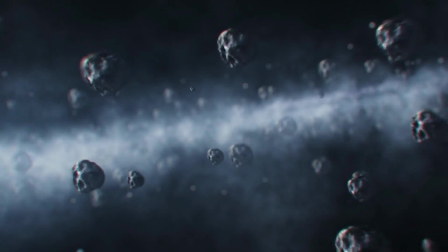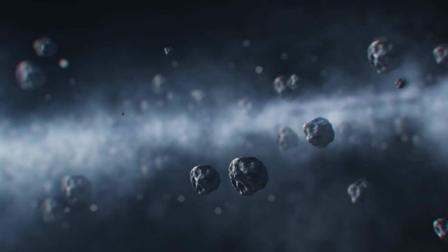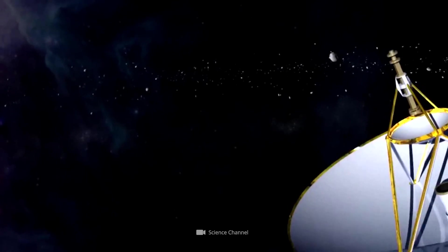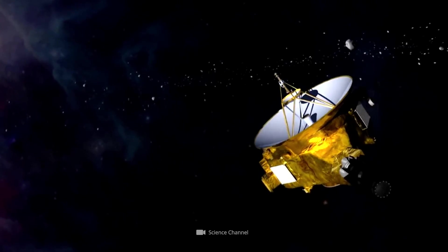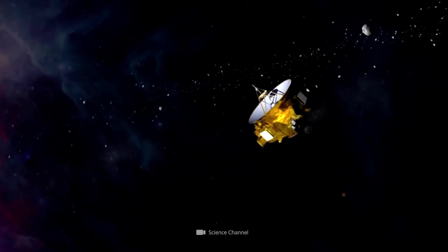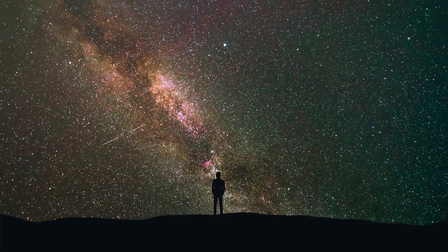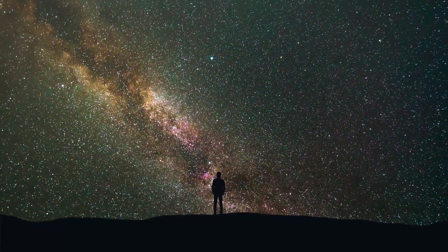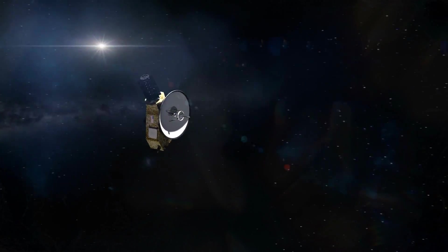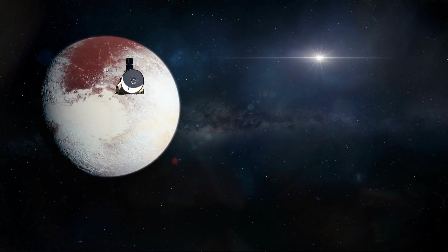Perhaps you think that the Kuiper Belt itself represents the wall at the edge of our solar system. However, in 2015, the New Horizons spacecraft made an amazing discovery. In 2006, the probe launched to explore the Kuiper Belt. In 2015, New Horizons reached the orbit of the dwarf planet Pluto.